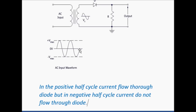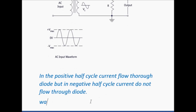In the negative half cycle, current does not flow. Hence, only in the positive half cycle does current flow, and in all the negative half cycles of the sine wave, current does not flow. Now let us see the waveform of the rectified output voltage.